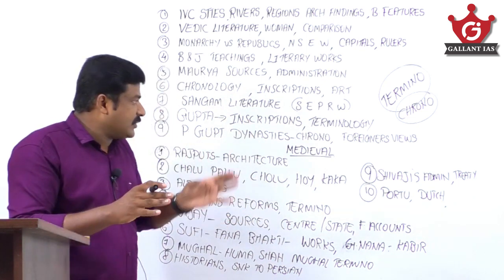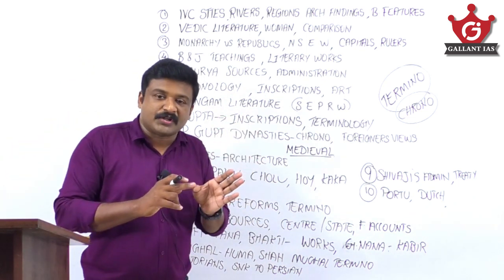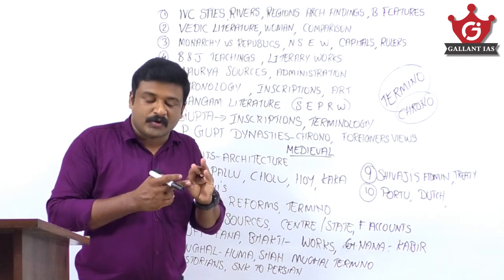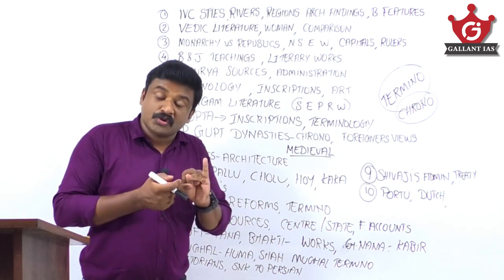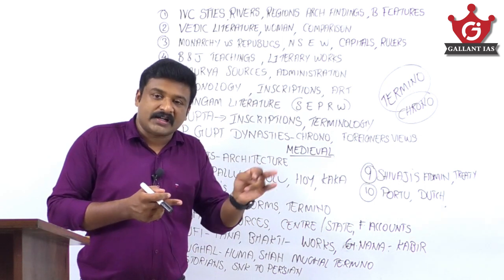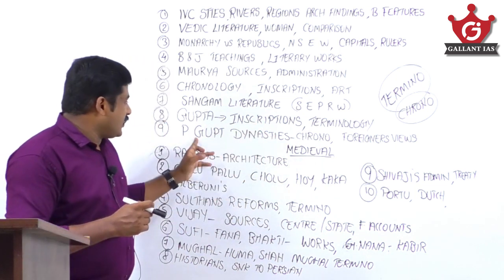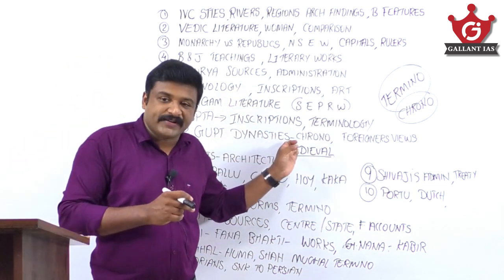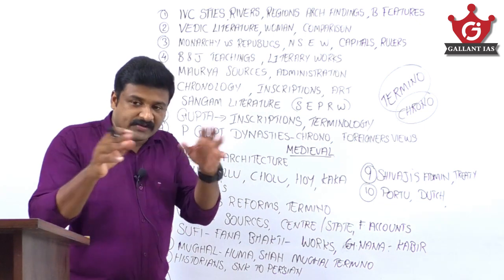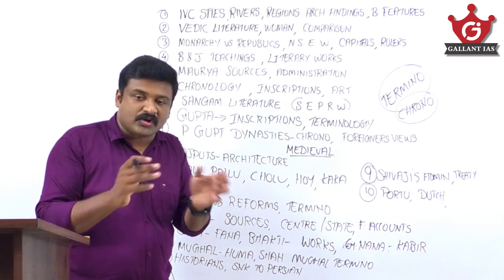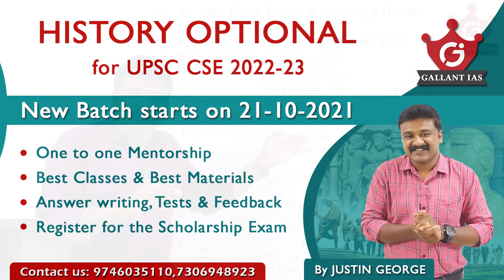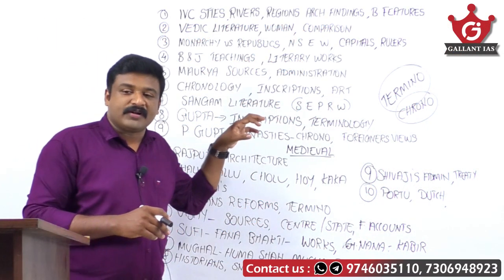For the Gupta period, various inscriptions and Gupta terminology are important — terminology related to the taxation system, polity, judicial administration, central administration, and provincial administration. For post-Gupta dynasties, know the chronology, the rulers and where they ruled, and the views of foreign visitors on society, religion, culture, and economy of that time.